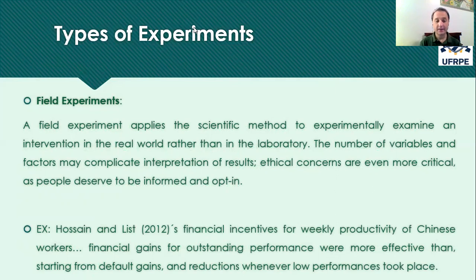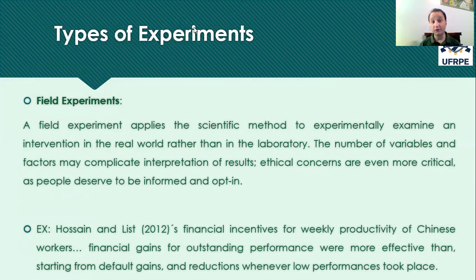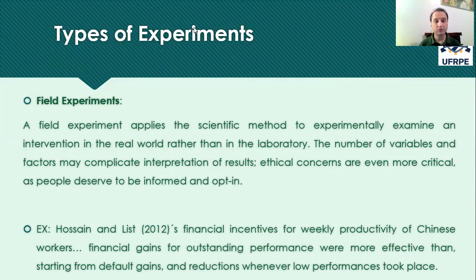Then they realized which of these incentive schemes is more effective. They found that financial gains for outstanding performance were more effective than starting from a default gain and threatening people with possible reductions if low performance took place. So different sorts of incentives produce different results. And once again, there are ethical issues here — you have to have free participation from individuals. We know that unfortunately in China, voluntary participation and democracy are not uncontroversial issues.